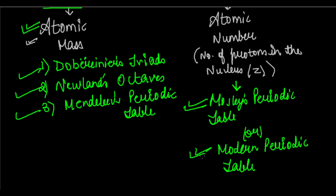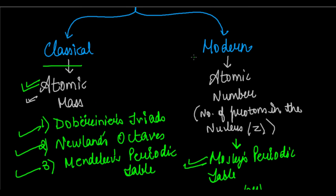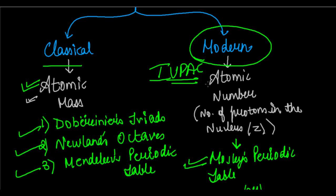These were the forms of classification — classical and modern. Today we use the modern form of classification, which is the most widely accepted, even by the IUPAC — the International Union for Pure and Applied Chemistry. In the next video we will begin with the classical methods, starting with Dobereiner's Triads and Newlands' Octaves. Thank you very much.